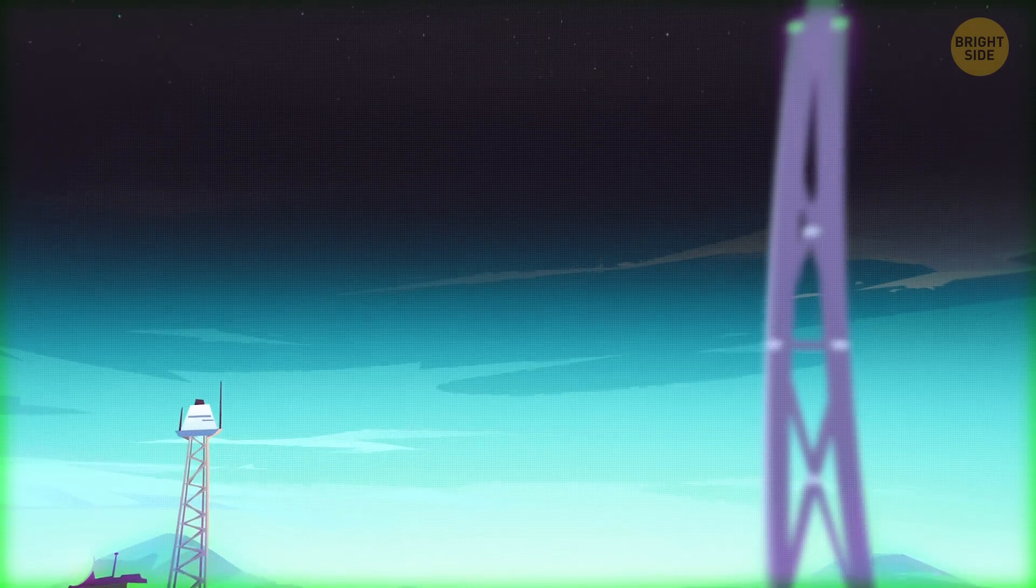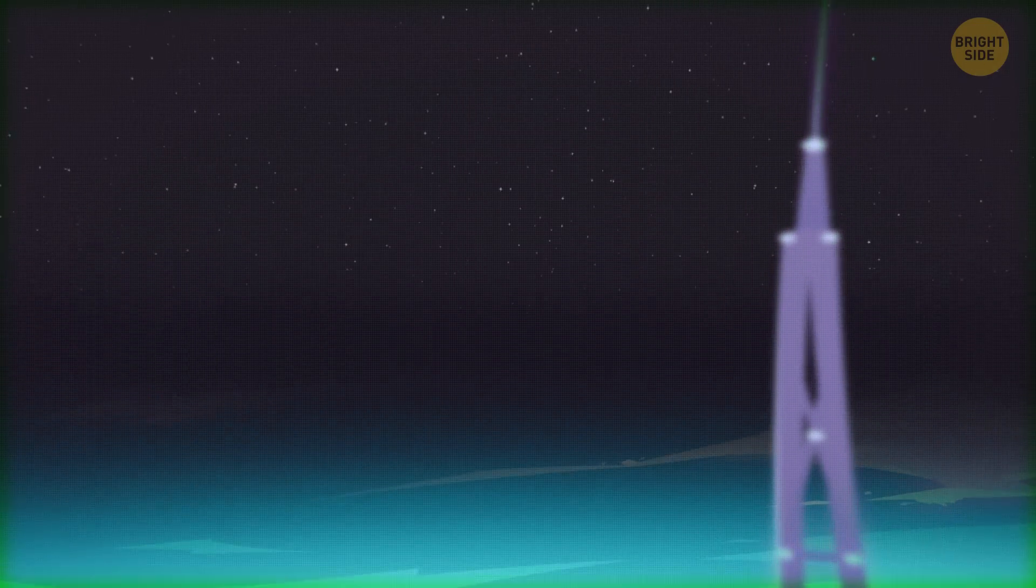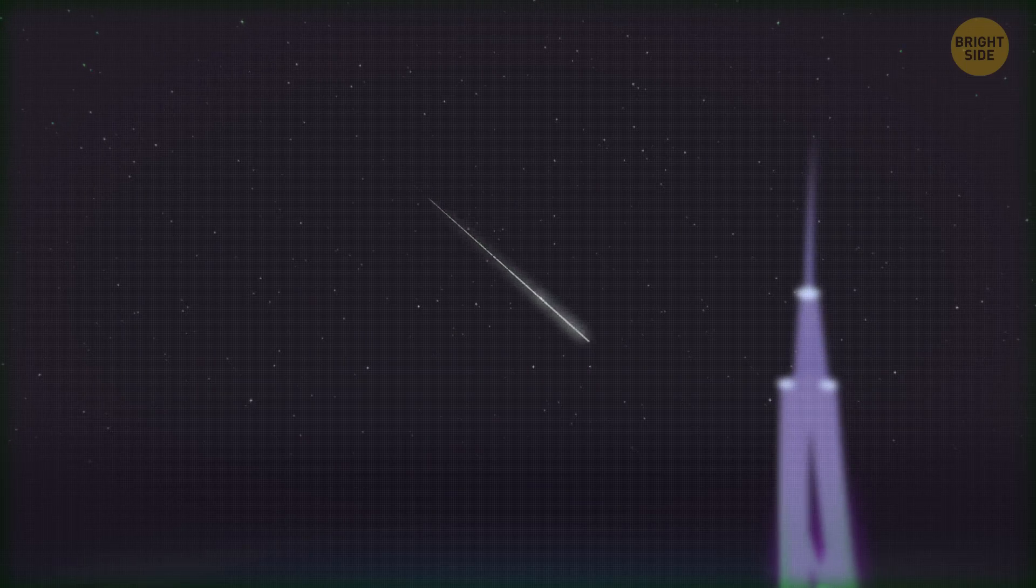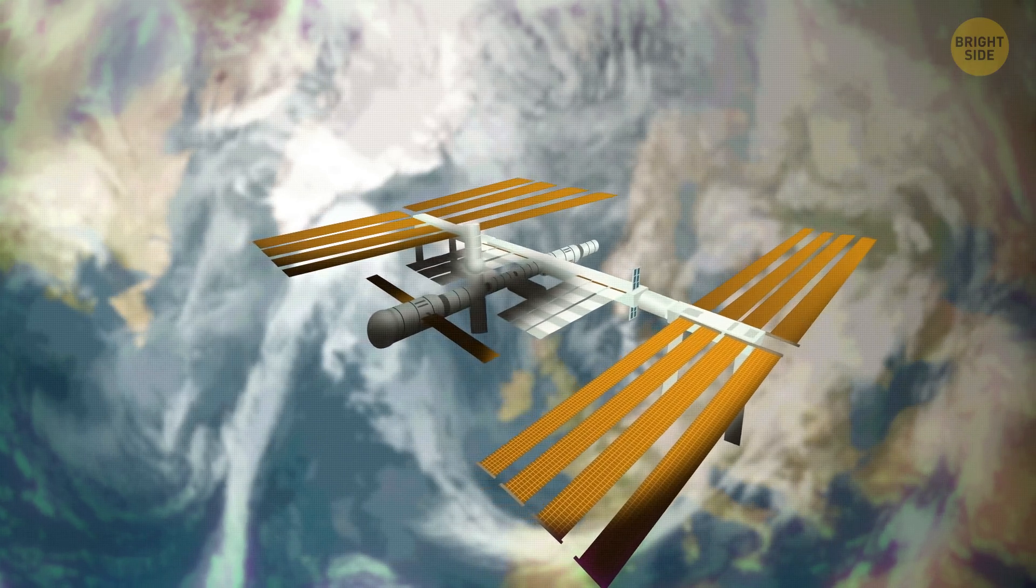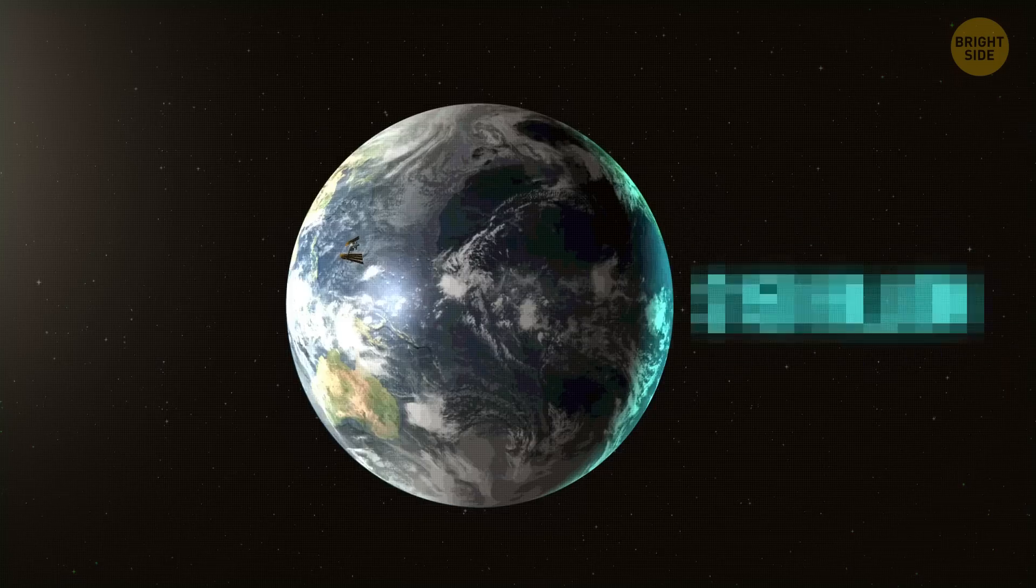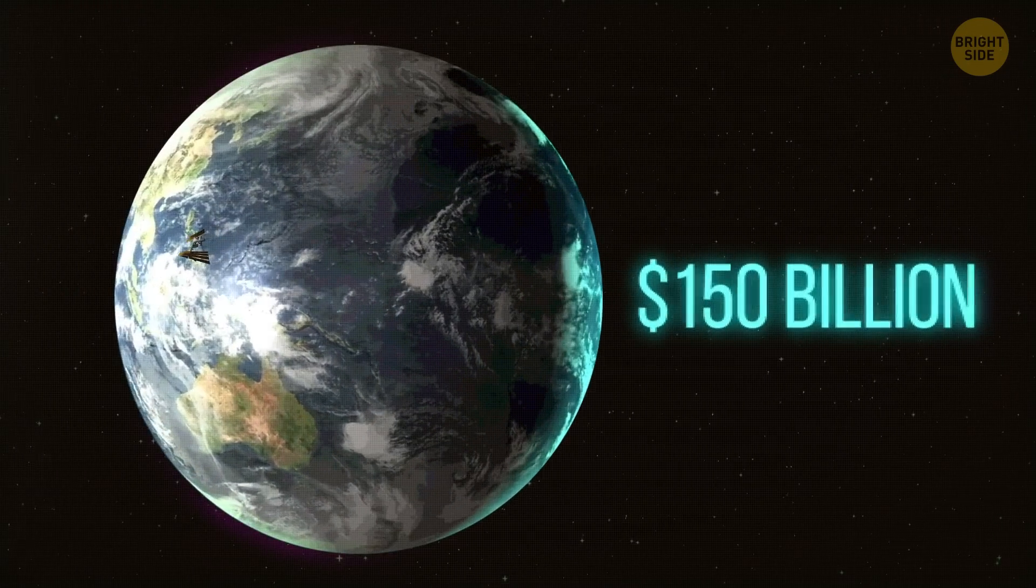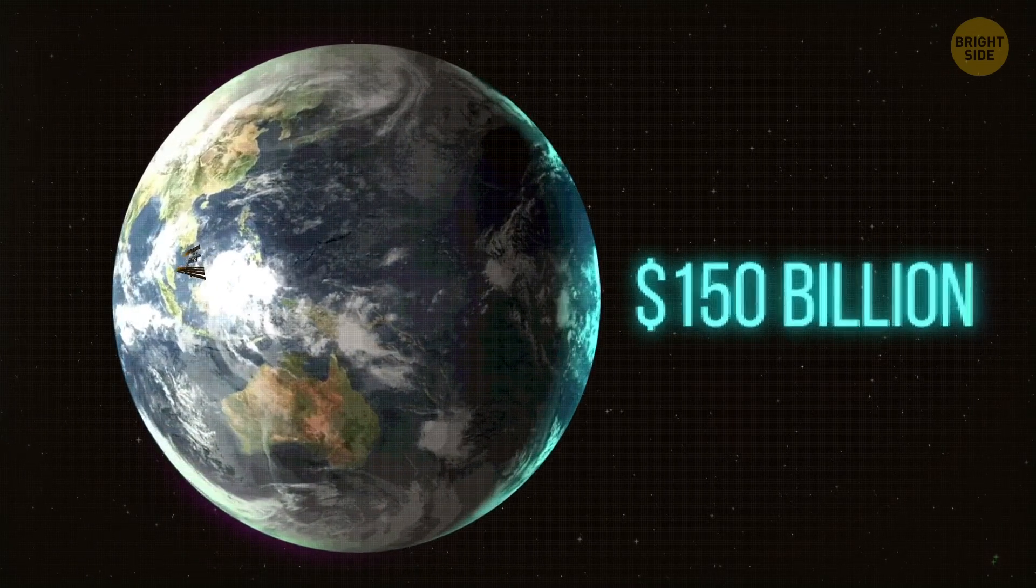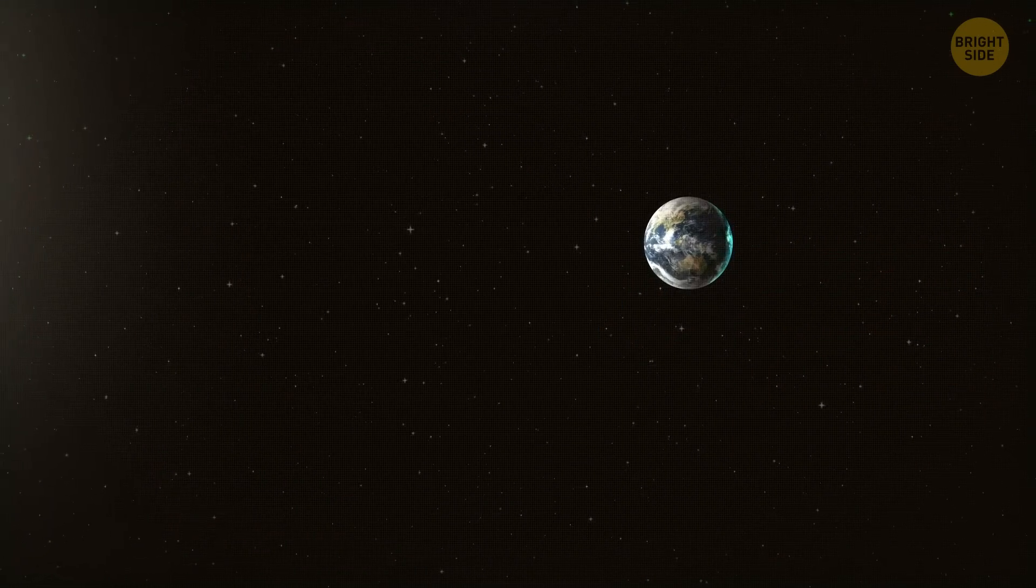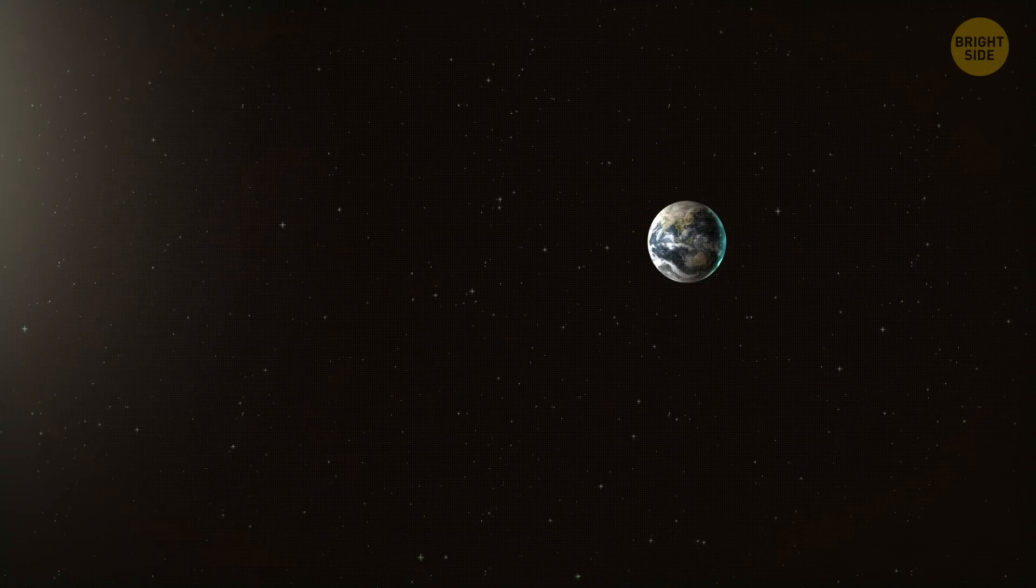The whole point is that it's much easier for a spaceship to launch from such a station because there's no gravity. And then, the ship doesn't have to use an incredible amount of fuel to leave the Earth's atmosphere. It took about $100 billion to build the ISS, and building Gateway could be even more expensive. But it should save us money in the future.